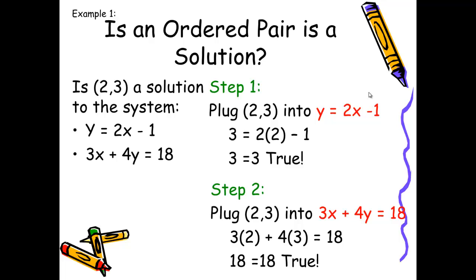In this first example, we are given an ordered pair and asked whether or not it is a solution. We are asked: is the point a solution to the system containing y equals 2x minus 1 and 3x plus 4y equals 18? There are three steps to answer this question. In step one, I plug the ordered pair into the first equation, y equals 2x minus 1. Substituting 3 for y and 2 for x, I get 3 equals 2 times 2 minus 1, which simplifies to 3 equals 3 — and sure enough, it's true.